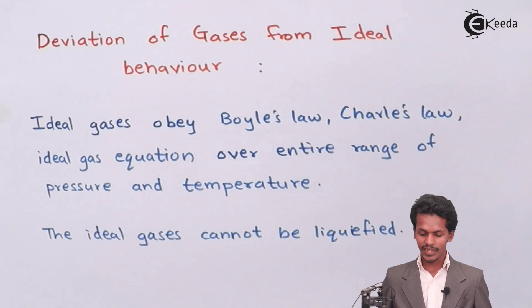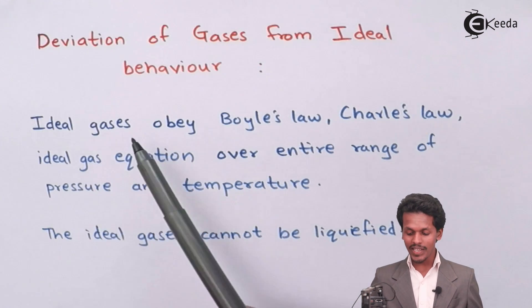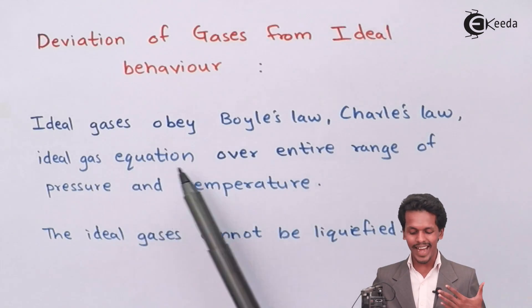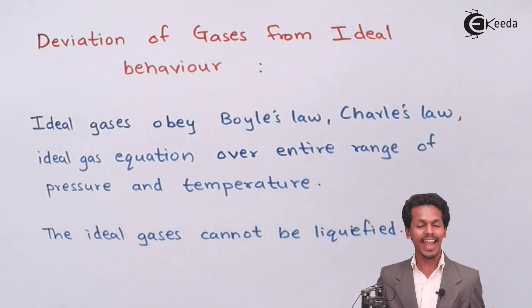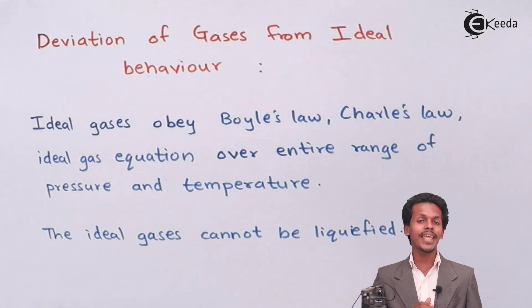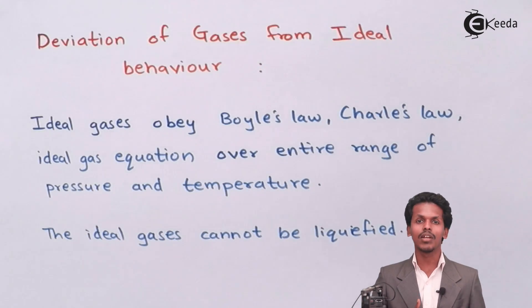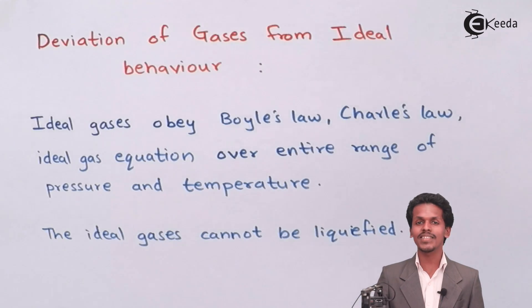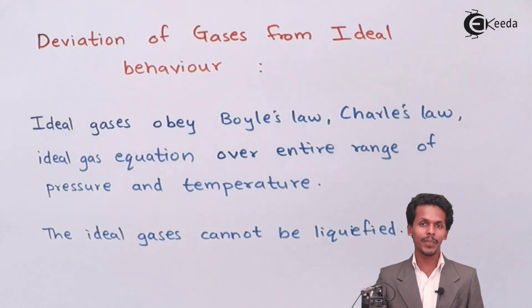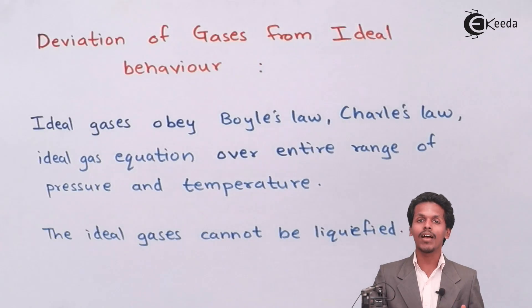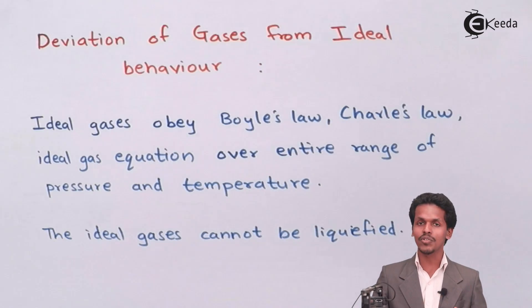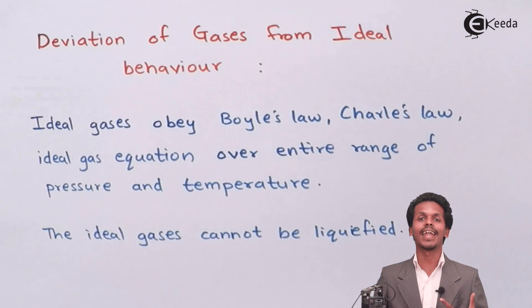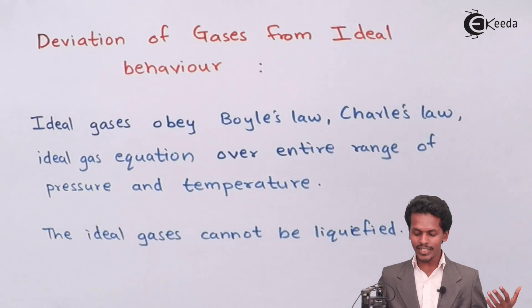As shown on your screen, ideal gases obey Boyle's law, Charles' law, and the ideal gas equation over the entire range of pressure and temperature. The main thing about the ideal gas equation is that ideal gases obey Boyle's law, Charles' law, and Avogadro's law, from which the ideal gas equation has been derived.